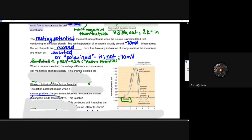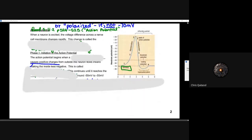There are some notes in 11.2 that you can look at after we finish this lesson, because ultimately it'll help with your understanding of how those resting potentials work. We'll keep going forward and look at the action potential of a neuron, because we can connect those ideas as we go. So when a neuron is excited, the voltage difference across a nerve cell membrane changes rapidly. This change is called the action potential — a change from the rest.